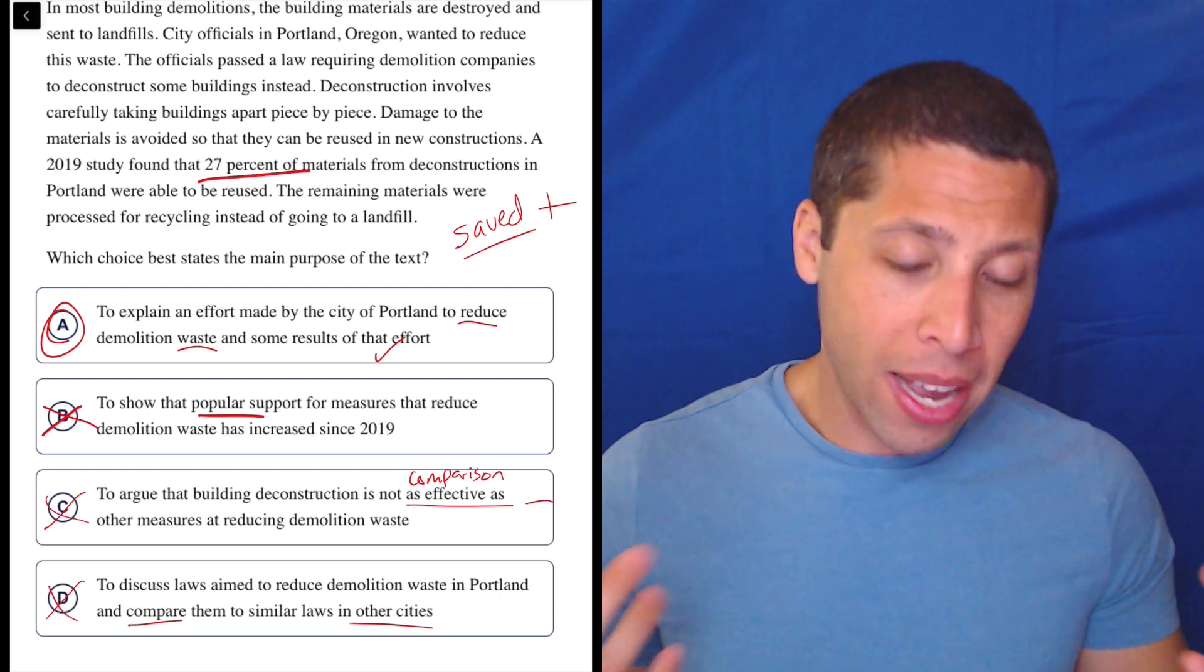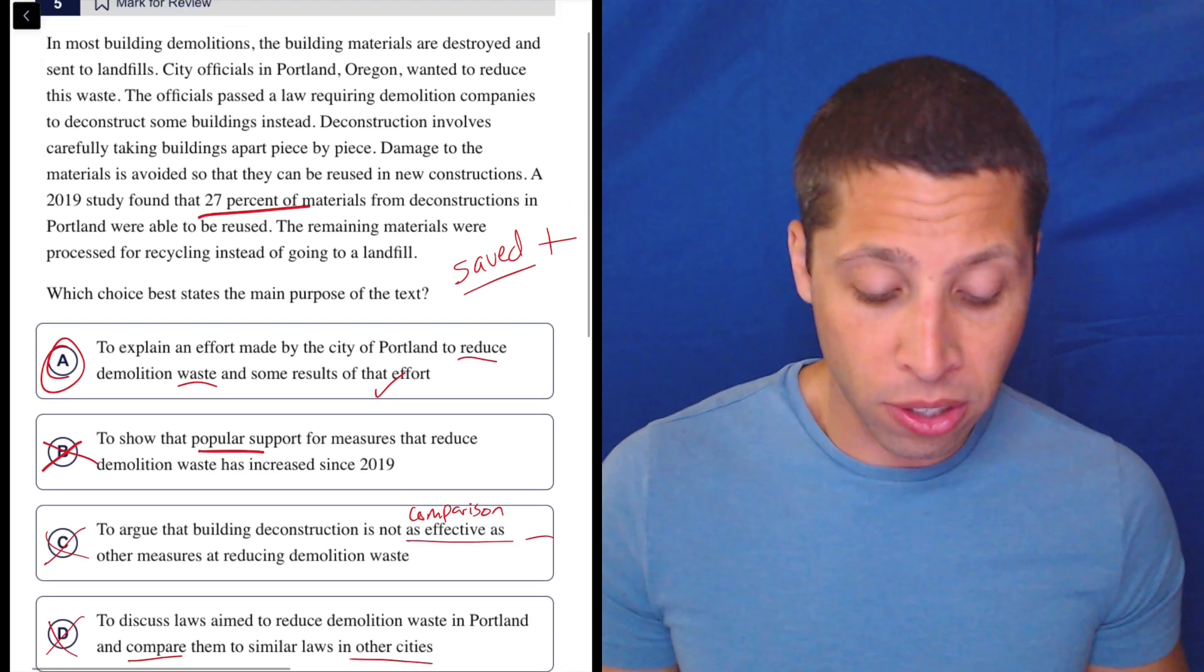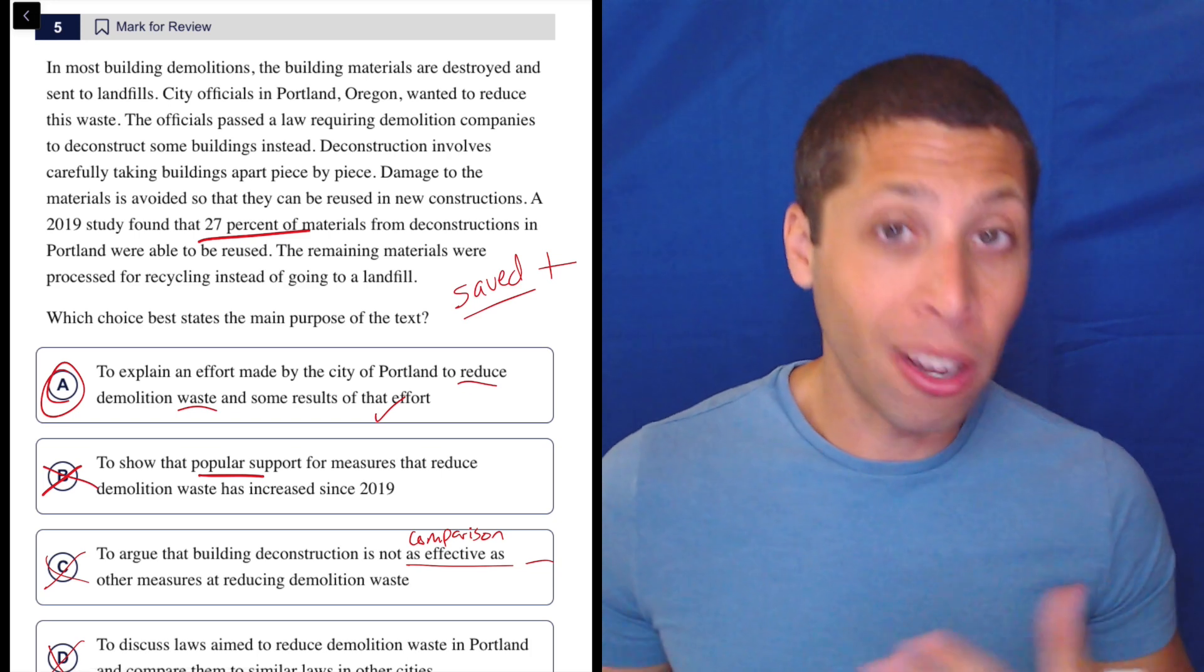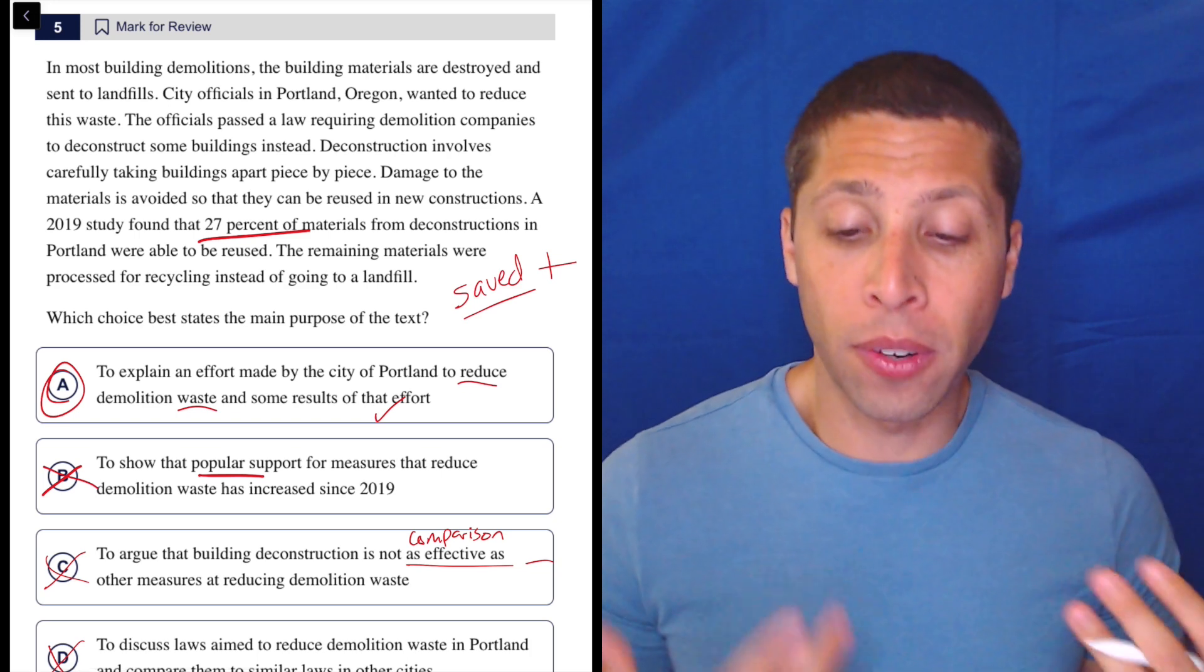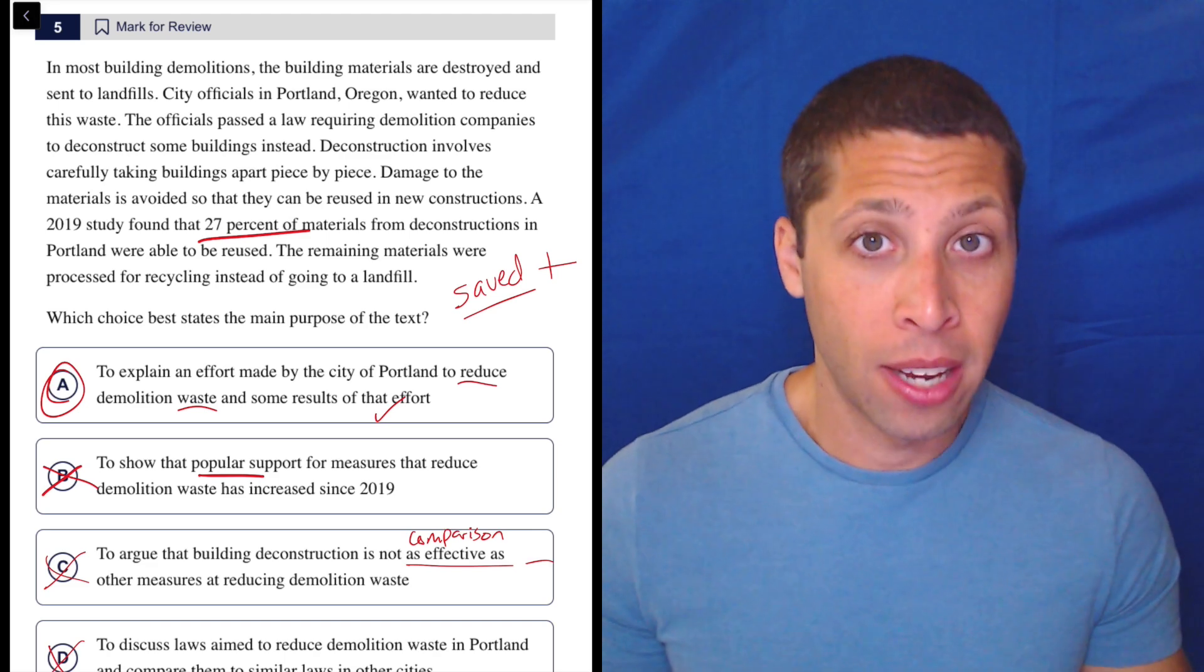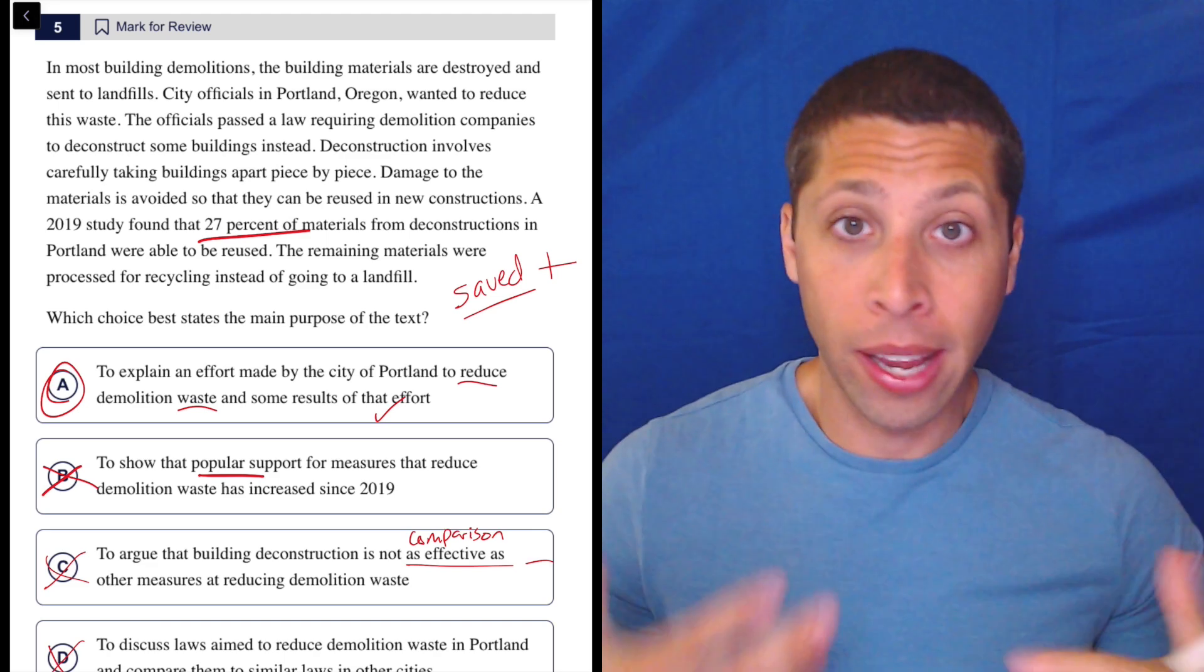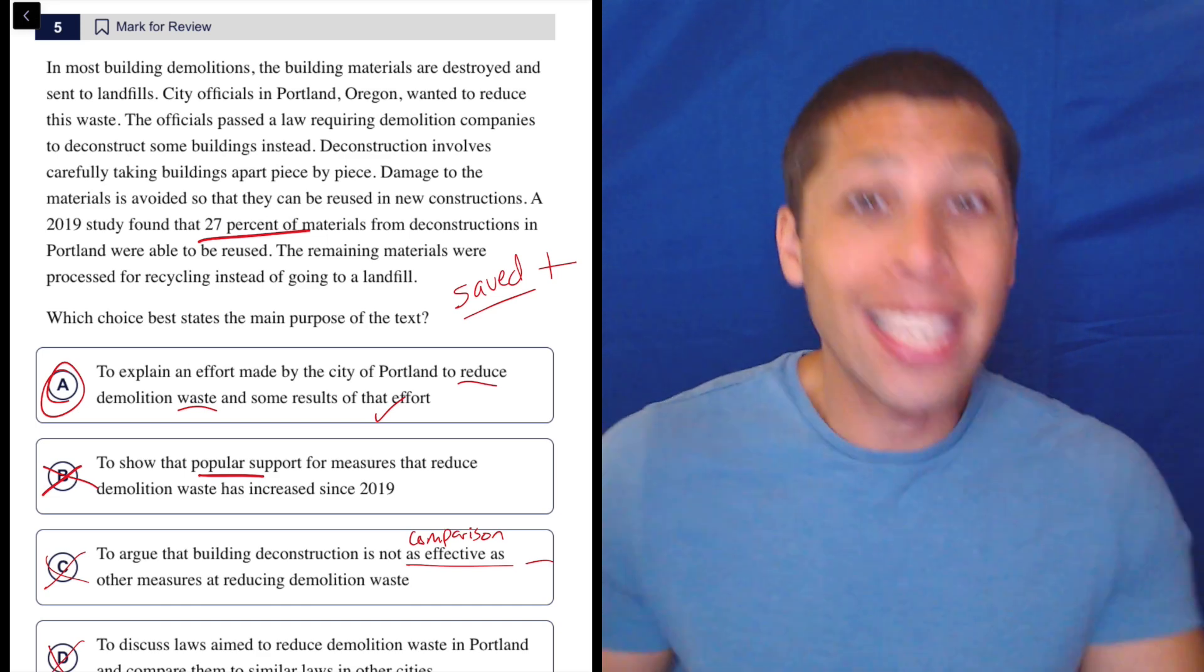My advice is kind of to do what I did, right? Notice that when I read, I didn't really highlight anything. I didn't really underline anything. I didn't try to memorize any of these specific facts. For me, it was very easy to just kind of get the gist and commit that to memory. Okay, it's about saving stuff from deconstructing. I get it.